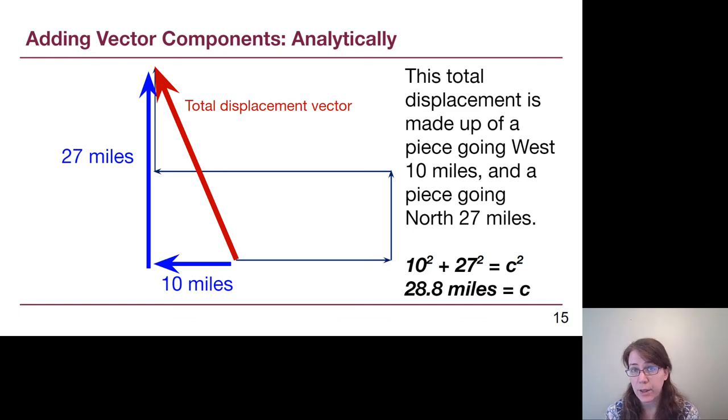If we wanted to get the length then we would use the Pythagorean theorem, A squared plus B squared equals C squared, where the length that we care about is that hypotenuse C. So 10 squared plus 27 squared gives us our hypotenuse squared value. And when we solve for C then, by taking the square root of both sides, we get 28.8 miles. And that's how far away we are as the helicopter flies.